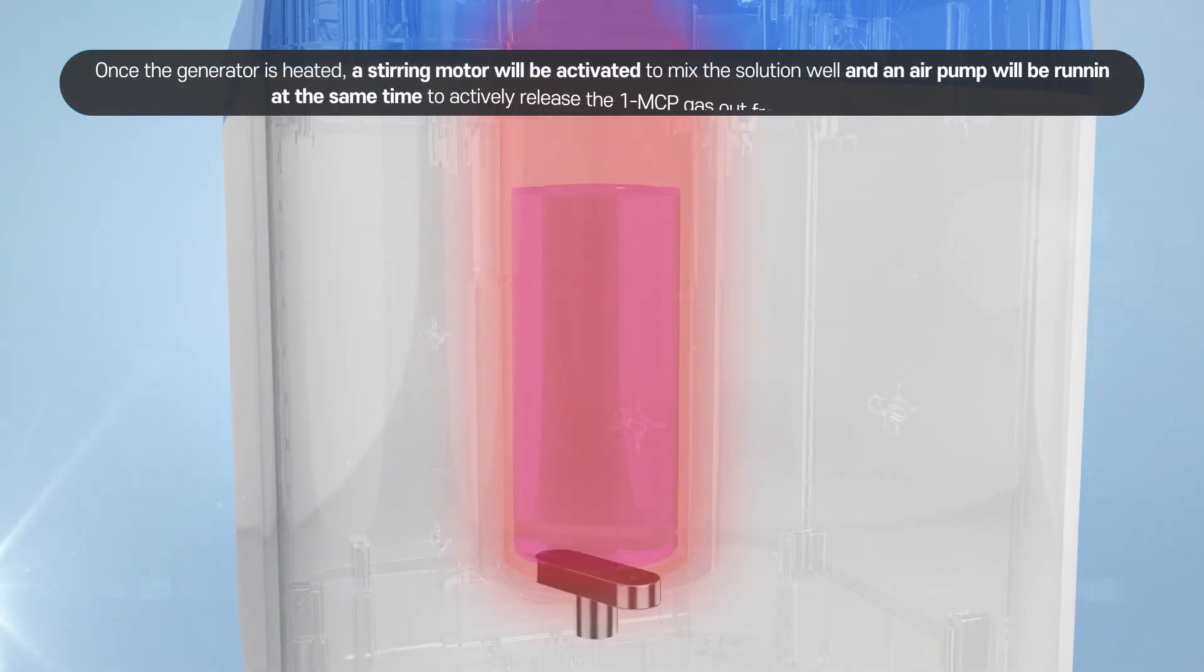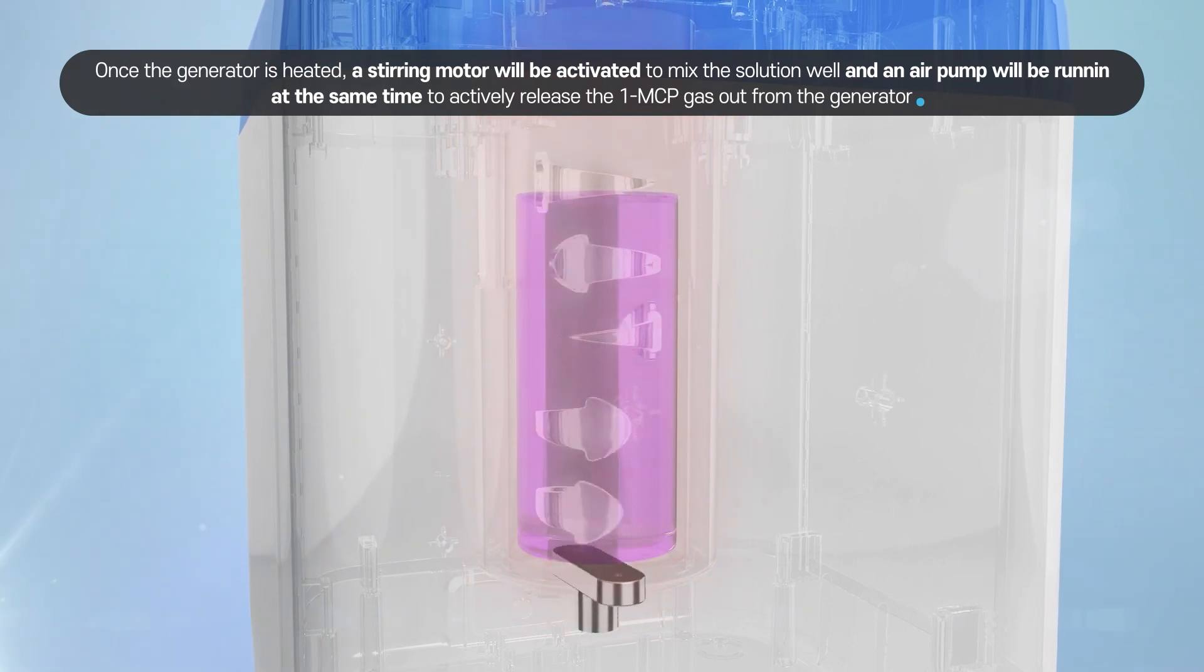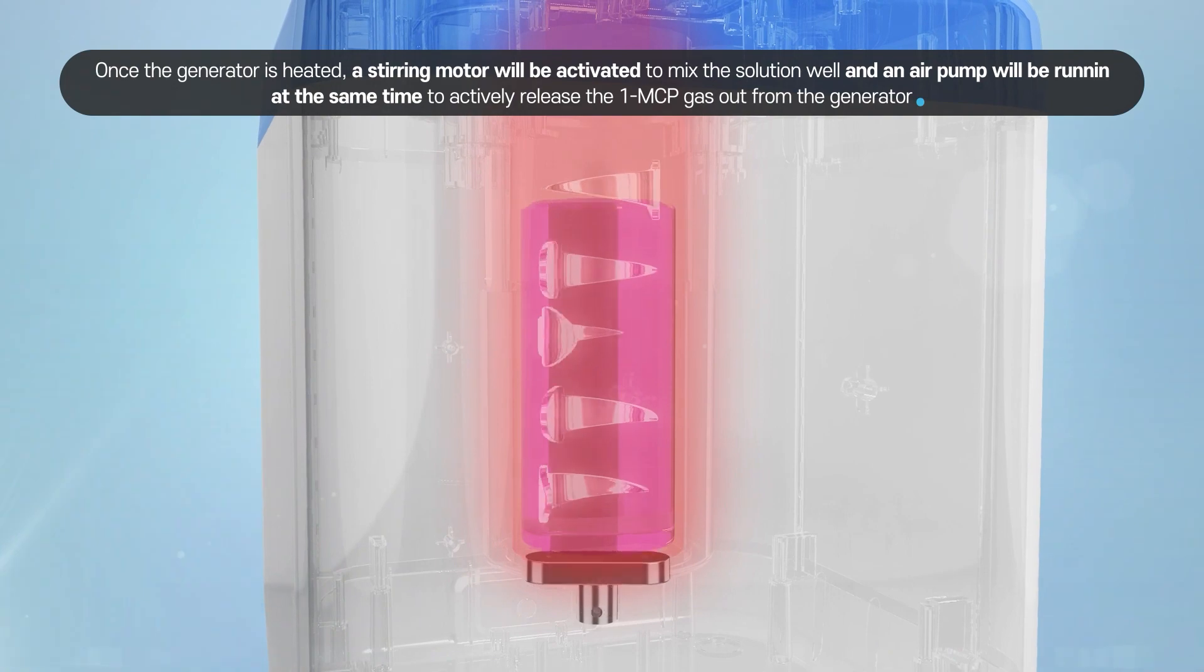Once the generator is heated, a stirring motor will be activated to mix the solution well, and an air pump will be running at the same time to actively release the 1-MCP gas out from the generator.